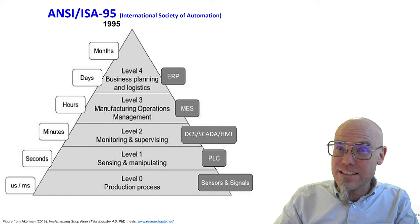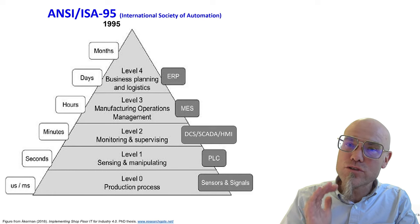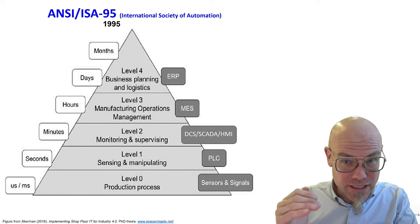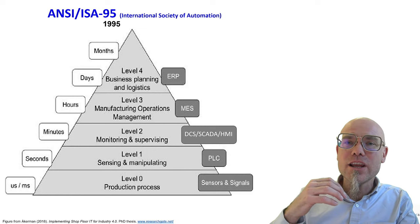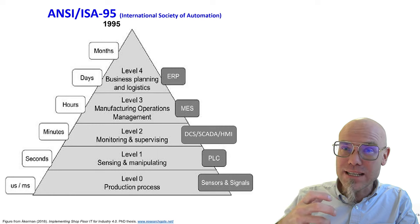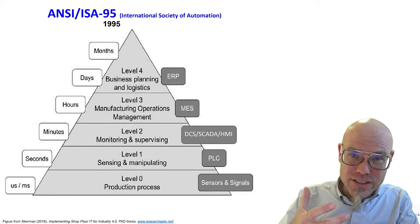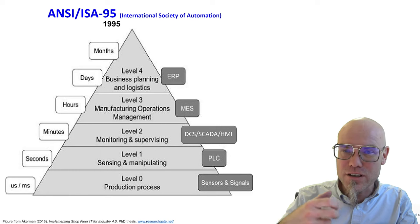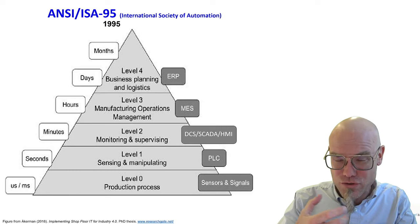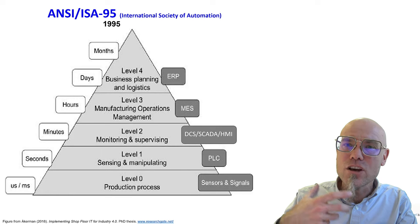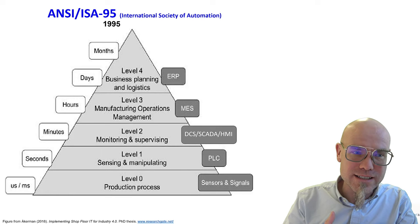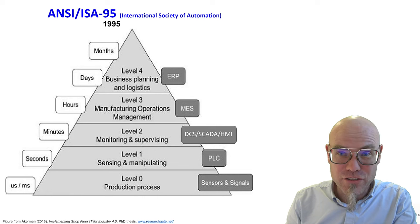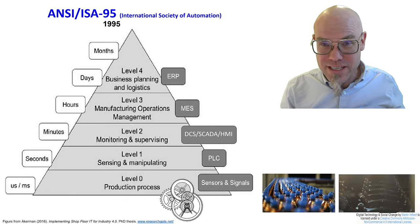Jumping ten years ahead, there's another model that is conceptually extremely similar, still used and referenced a lot to bring companies and organizations into the digital age. Managers in the process of digitalization and digital transformation of their companies use this reference model a lot. It's the ANSI ISA 95 model — the ISA 95 model from the International Society of Automation — and conceptually it's very similar.